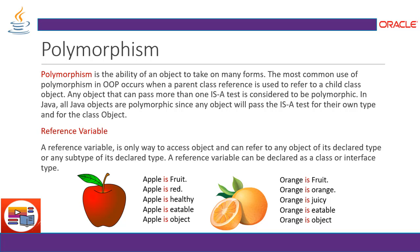Similarly, orange is a fruit, is orange color, is juicy, is eatable, and is an object — the 'is-a' relationship from orange to these characteristics makes it polymorphism. This is also implemented with a reference variable, which is the only way to access an object and can refer to any object of its declared type or any subtype. Remember, polymorphism is nothing but an 'is-a' relationship from an object to its characteristics.